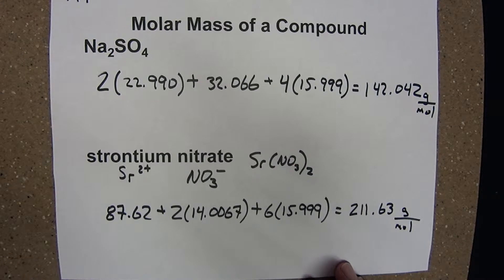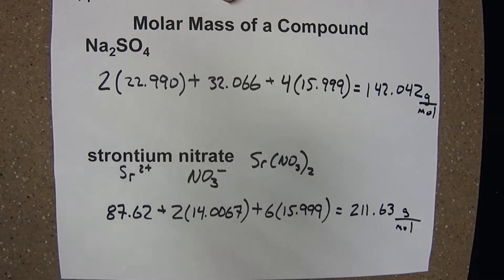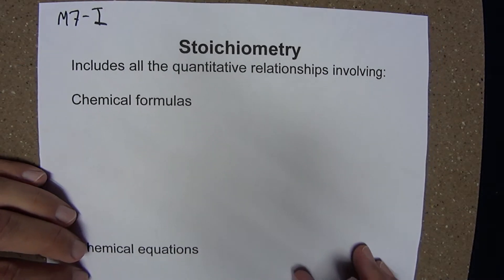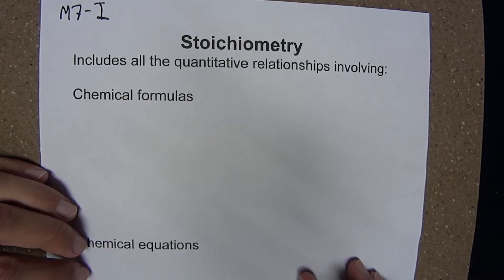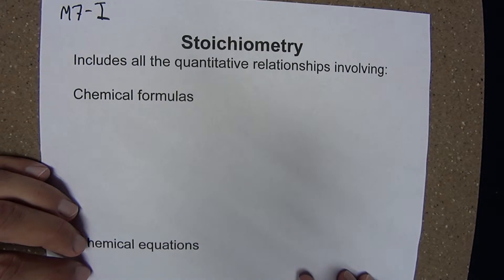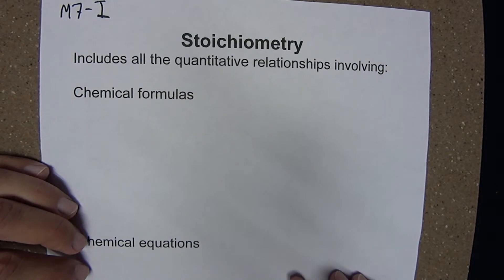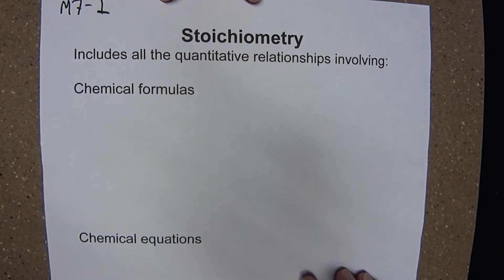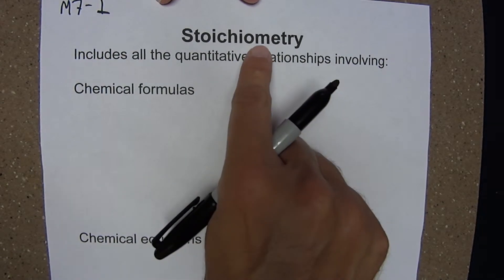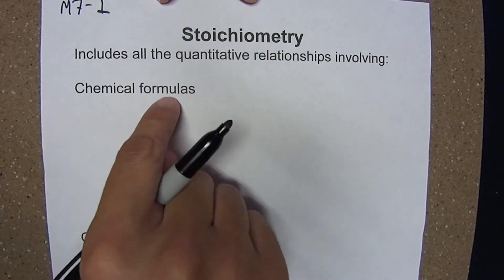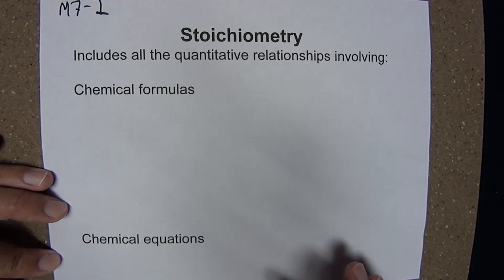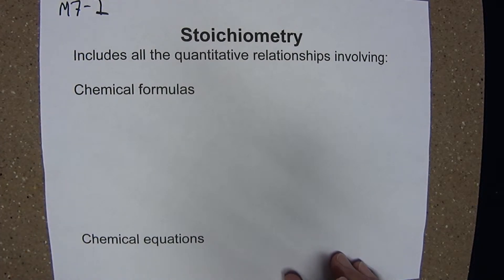Stoichiometry is a very important branch of chemistry concerned with the proportion in which elements combine to form compounds, and in which elements and compounds react in chemical changes. What we'll be concerned with in this module is simply the stoichiometry associated with compounds as determined by their chemical formulas. In a subsequent module, we will explore the stoichiometry associated with chemical equations.